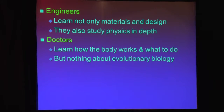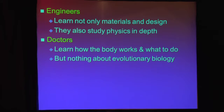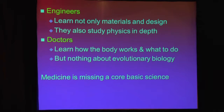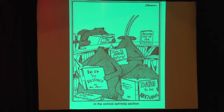However, there's this basic science missing: evolutionary biology. It's a core basic science, but hardly any of us ever get a chance to learn it. And our question for today is, does this matter? You know the answer, otherwise I wouldn't be talking with you. The answer is, if you want to learn how to avoid natural selection, you had better study evolutionary biology.